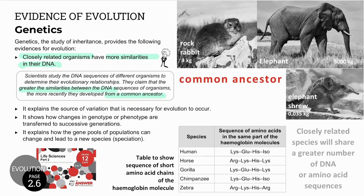Genetics shows DNA as the source of variation for evolution, explaining how changes can occur and be transferred to different generations. It also explains how gene pools of populations can change and eventually result in speciation. The more similar the DNA sequences or amino acid sequences, the more closely related the species. We can see in a table that humans and chimpanzees have an identical four amino acid sequence in a hemoglobin molecule.